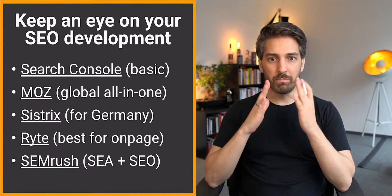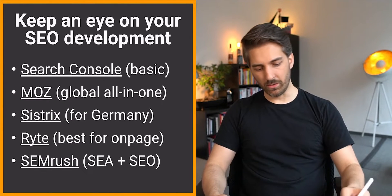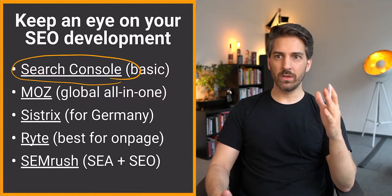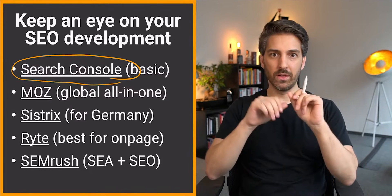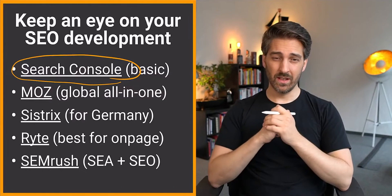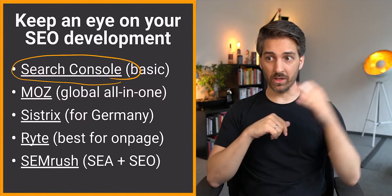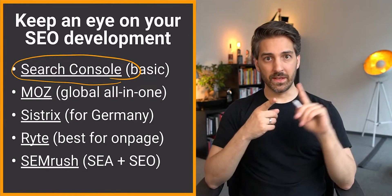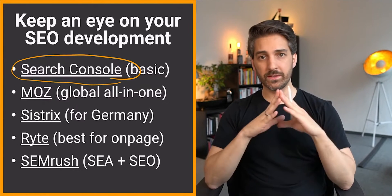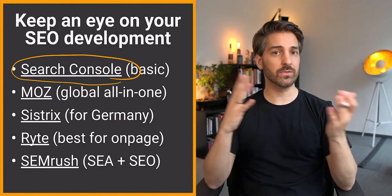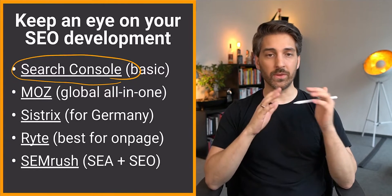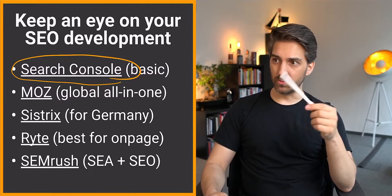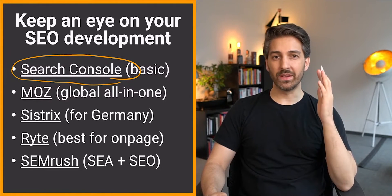If you want to keep an eye on your SEO development over time, the basic tool to use — because it is the only source of truth — is Google Search Console. It shows you how often your website showed up in search results. No other source like that exists, and all other tools always ask for access to Search Console. Setting up Search Console with Google Analytics is always the basic thing to do if you want to see how much traffic you're getting from Google and from which keywords.